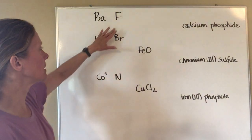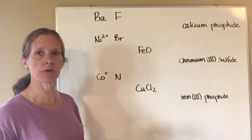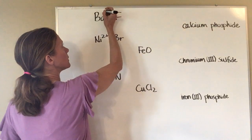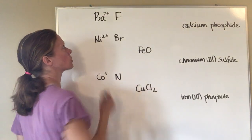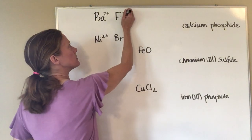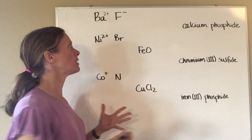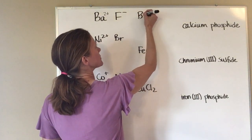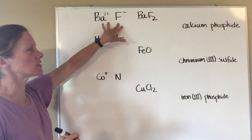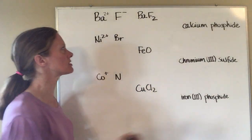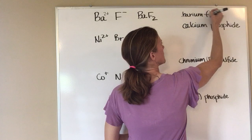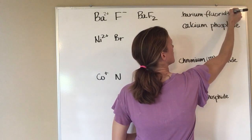The first one is barium and fluorine. Barium is in the second column on the periodic table, so everything in that column has a positive two charge. Fluorine is in the second-to-last column, where everything has a negative one charge. To balance the charges, I need two fluorines for every barium. So this is barium fluoride — F-L-U-O-R-I-D-E.